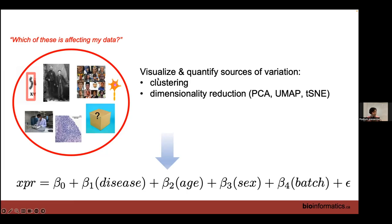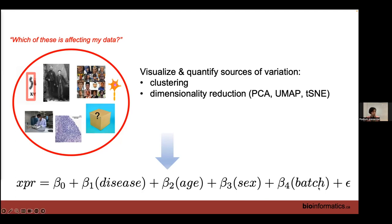For identifying these sources of variation, we have tools — some of which we'll introduce in this workshop. These tools allow you to visualize and quantify various sources of variation. Tools include clustering and dimensionality reduction, which we'll cover this afternoon — things like PCA, UMAP, and t-SNE, very popular in single-cell genomics. When the dust settles and you've done your EDA, your expanded model might look like: intercept + disease + age + sex as covariates, plus a batch term, plus the unmodeled leftover variation.